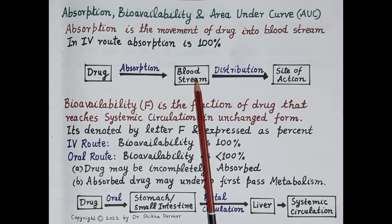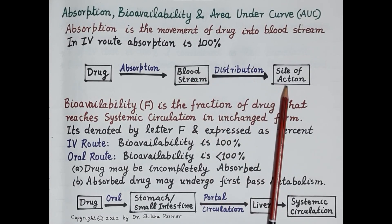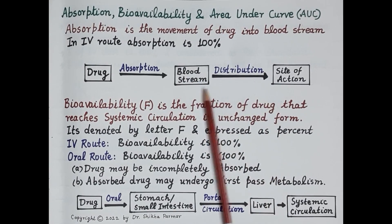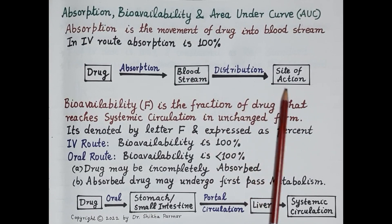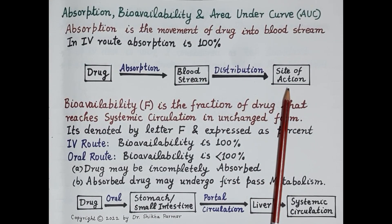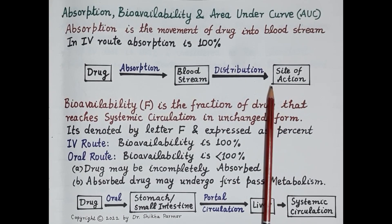Absorption is the movement of the drug into the bloodstream. Systemic blood circulates throughout the body, and thus the blood distributes the drug to all body tissues including the site of action. This is how the drug reaches the site of action. So the term absorption of drug should now be clear.